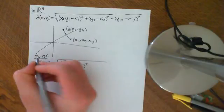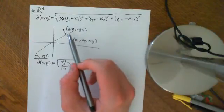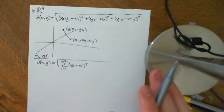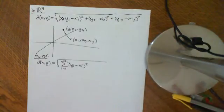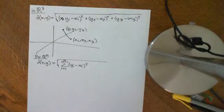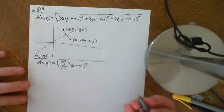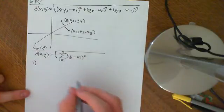We can equip Rⁿ with this distance function. Let's verify it obeys axioms 1, 2, and 3. We can see clearly it will obey axiom 4 for n = 2 and n = 3. It is not trivially obvious for higher dimensions, since we cannot visualise those. We will prove later that this formula obeys the triangle inequality without relying on a picture, since for higher dimensions we can't rely on one.